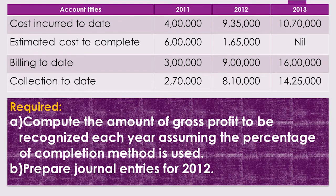The cost incurred to date figures are: 2011 — 3,00,000; 2012 — 8,00,000; 2013 — 10,00,000. The estimated cost to complete: 2011 — 2,00,000; 2012 — 8,00,000. Billings to date: 2011 — 5,000; 2012 — 5,000; and total eventual contract value is 7 million.